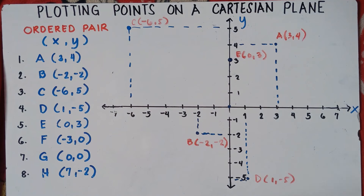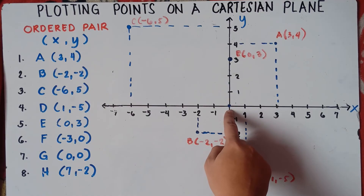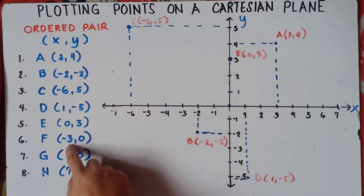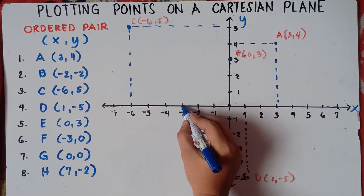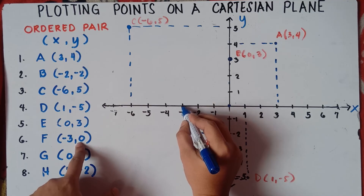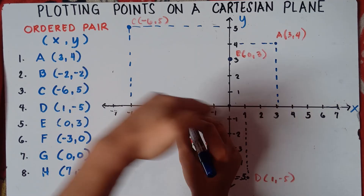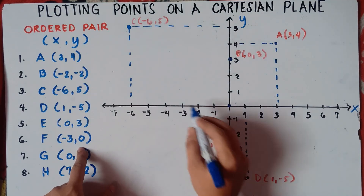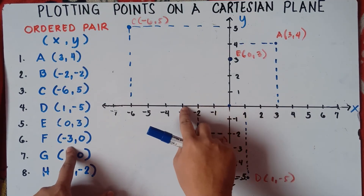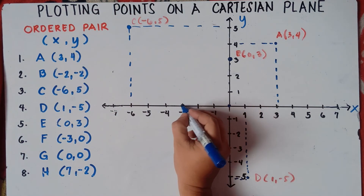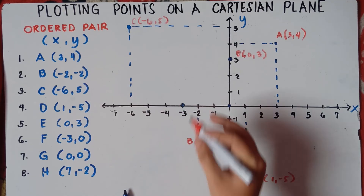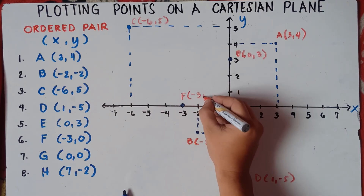For point F, x is negative 3 and y is 0. Move 3 units to the left from the center — 1, 2, 3. Since y is 0, you will not move upward or downward, just stay on the horizontal line. So the point is at (-3, 0). Label it: F is (-3, 0).